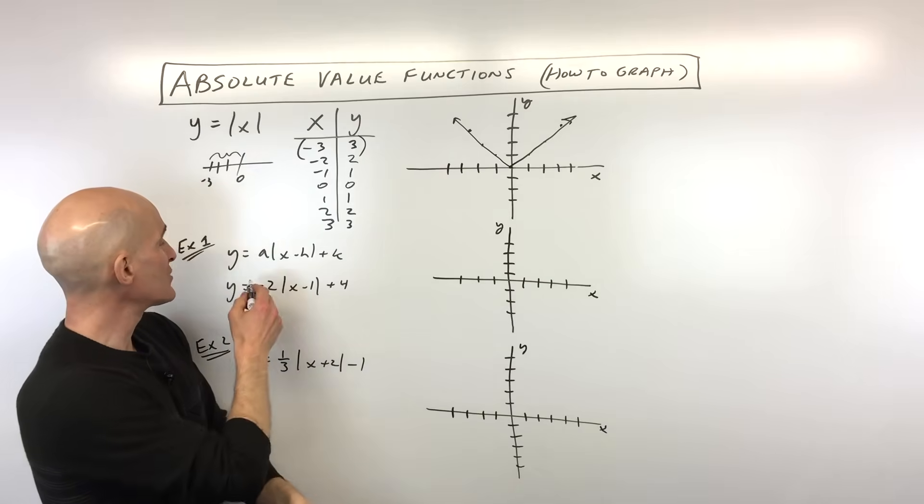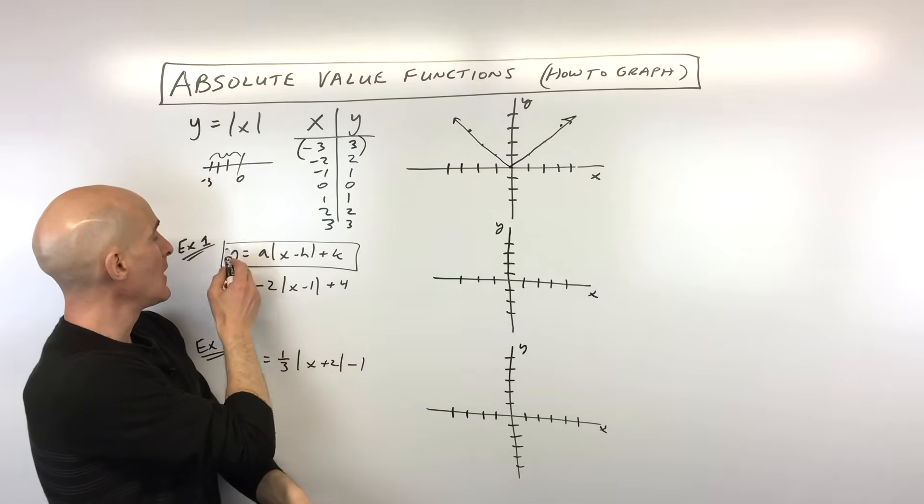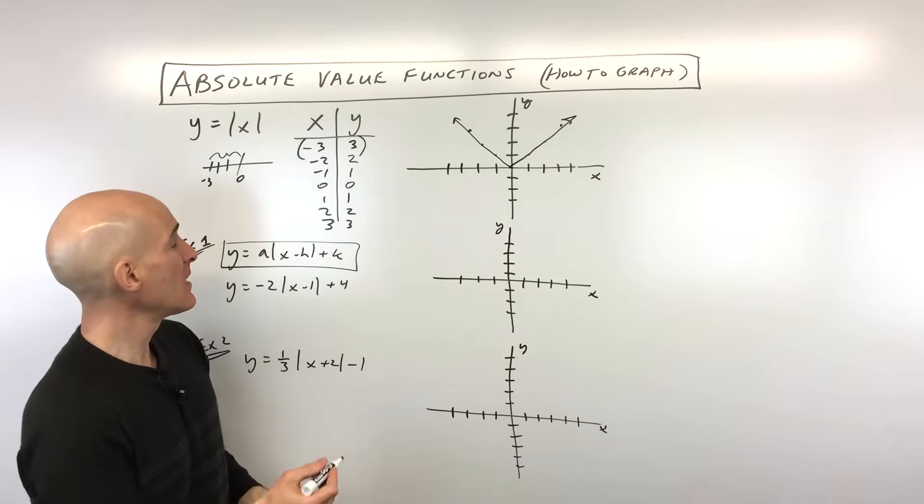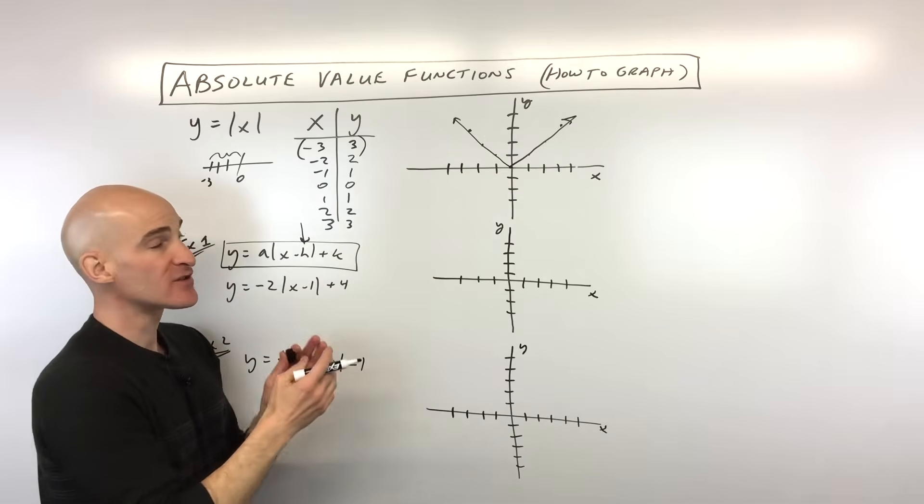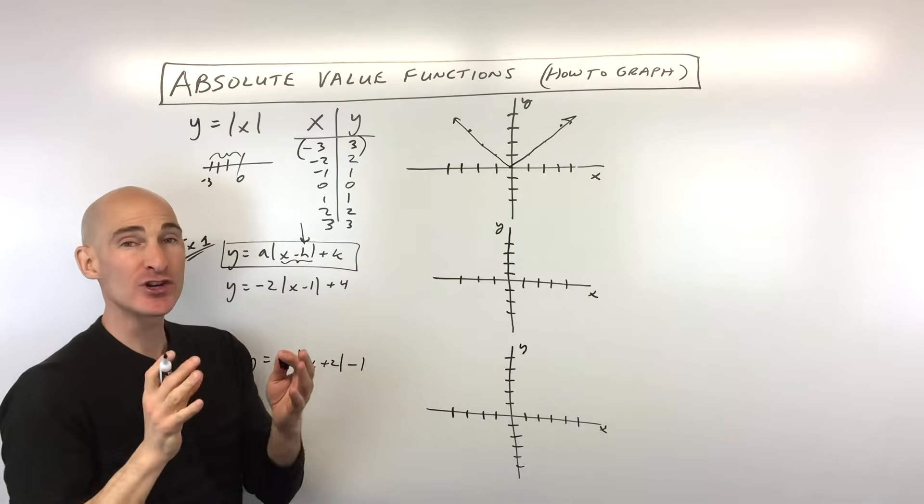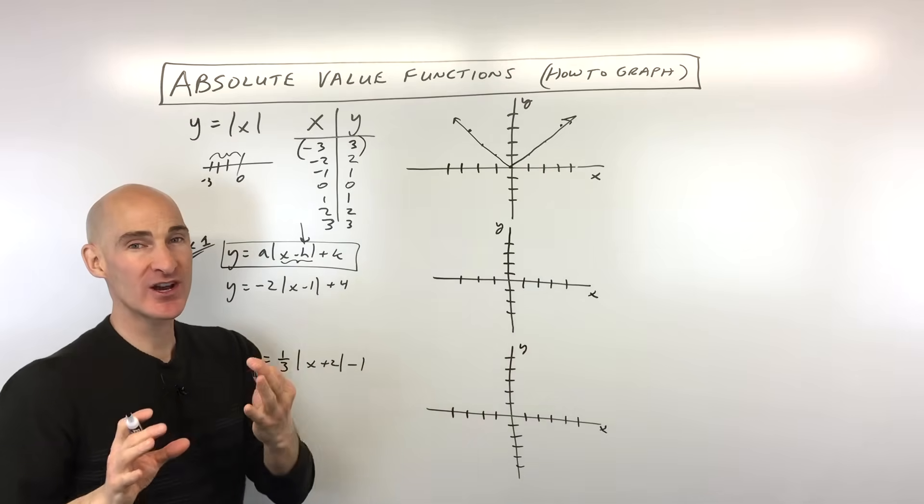But now let's say we want to do more challenging ones. Say, for example, ones that are in this form here, y equals a absolute value of x minus h plus k. So how does this work? Well, the h is what shifts the graph left and right. So this number that's grouped with the x, it's easy to remember. It shifts it in the x-axis direction, left and right.